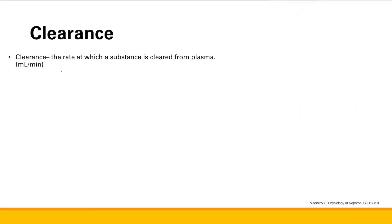I want to talk about how to calculate GFR and renal plasma flow. Before we do that, I need to introduce this term called clearance. Clearance is the rate at which a substance is cleared from plasma, calculated in milliliters per minute. More specifically, clearance is the volume of plasma that is completely cleared of a substance per unit time.